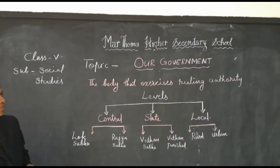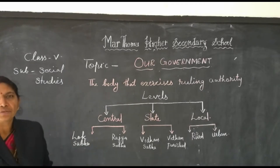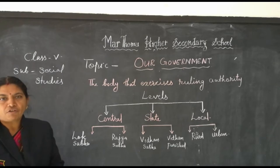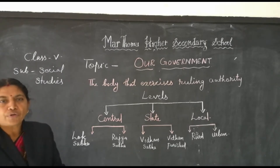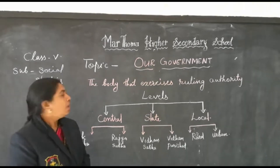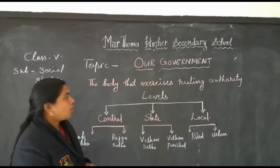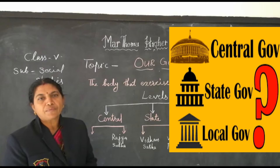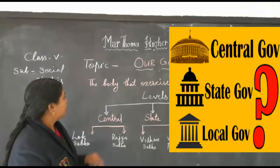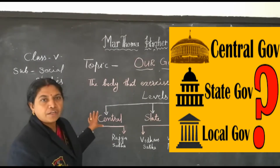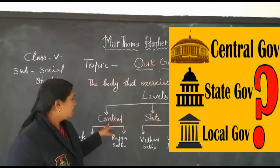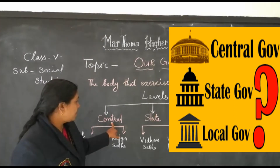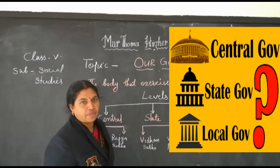Government is the body that exercises the ruling authority. It is the ruling body, the decision making body of the people, the law making body of the people, and the body that solves problems of the people. That is why the government is divided into three levels for distributing the power: central level, state level, and local level.